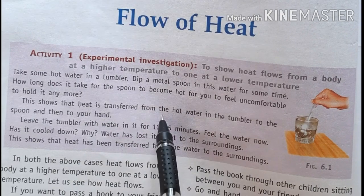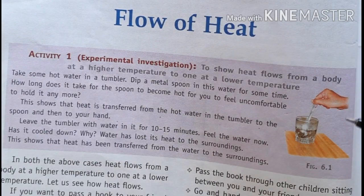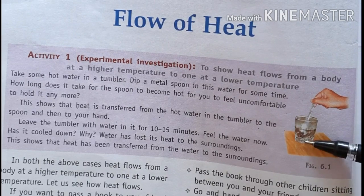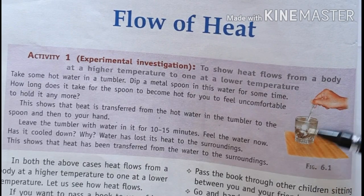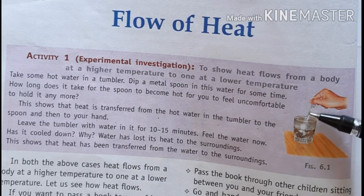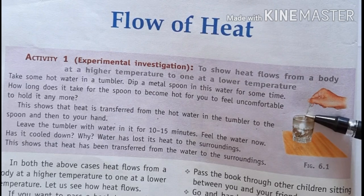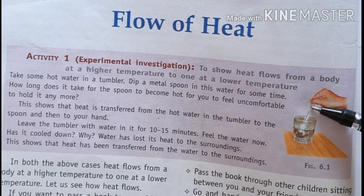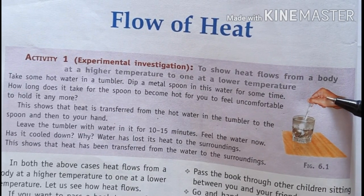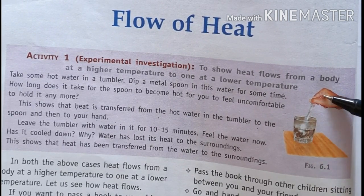This shows that heat is transferred from the hot water in the tumbler to the spoon, and then to your hands. Your hands are not directly in contact with the hot water, but you cannot hold the spoon. The water temperature is higher than the spoon, so the heat transfers from water to the metal spoon. Then, the spoon temperature becomes higher than your hands, so heat transfers from the metal spoon to your hands.